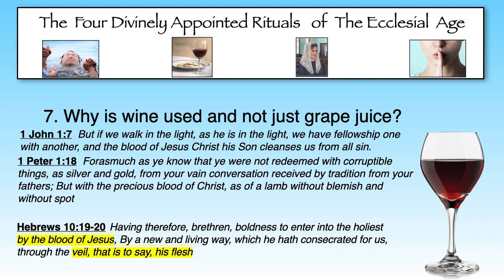We read in Hebrews 10:19: 'Having therefore boldness to enter into the holiest by the blood of Jesus, by a new and living way which he has consecrated for us through the veil, that is to say his flesh.' So there we have the flesh and the blood of Christ that provides that access to the holiest — those are the two components of the bread and the wine. The temple veil also represented the flesh of Christ just like the memorial bread. That temple veil was ripped in two immediately upon the death of Jesus, the same temple veil upon which the blood of the sin offering was spattered seven times by the high priest. By that blood of Jesus seen in the memorial cup, we are permitted to enter the holiest of all.